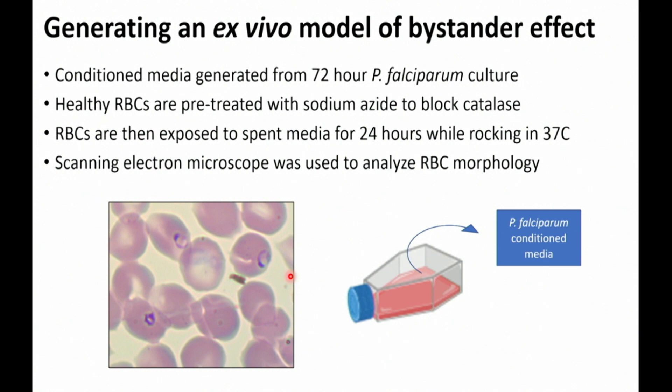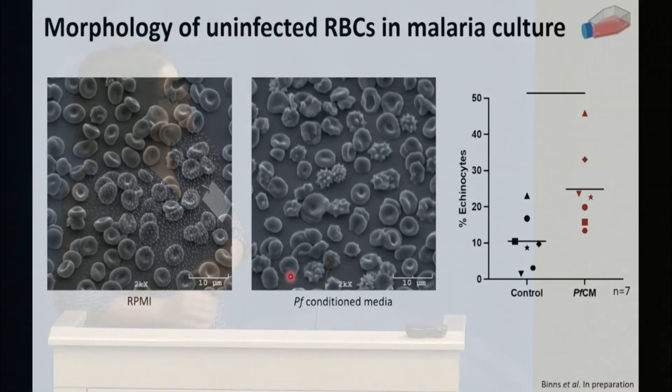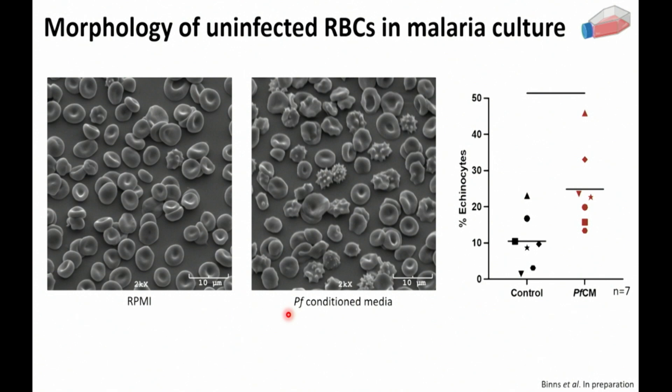We grew Plasmodium falciparum culture in flasks and incubated it with healthy red blood cells. First, we incubated the cells with sodium azide to block catalase. The reason is that cells use catalase as a first pass to deal with oxidative stress, but in acute malaria they're dealing with so much oxidative stress that catalase gets used up and they need to produce glutathione. We mimicked this stressed state and then incubated the cells with spent media from a falciparum culture. What we saw was a real increase in echinocytosis — those spiked-looking red blood cells — when comparing cells in non-spent media versus spent media. Based on scanning EM, we could see that morphology clearly.